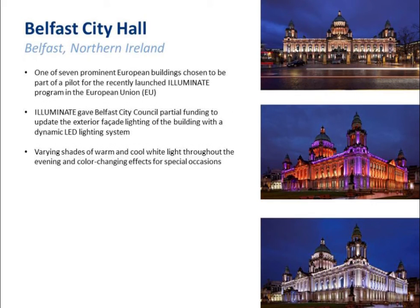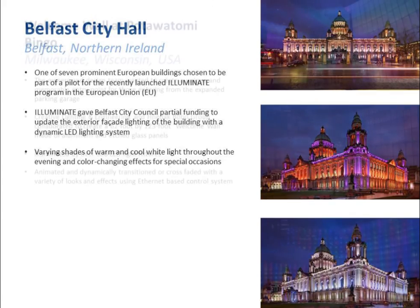At Belfast City Hall in Belfast, Northern Ireland, this prominent European building was chosen as a pilot for the Illuminate program in the European Union — a municipal building partnering with private entities to illuminate its facade. In most cases it's lit with white, cool white, or warm white light, but for special occasions there's the option for dynamic color changing. Spotlighting is used here to highlight those architectural details — the columns, the rotunda — to really create depth and interest across the large building facade.